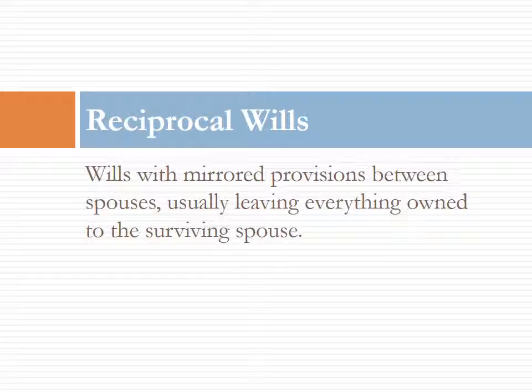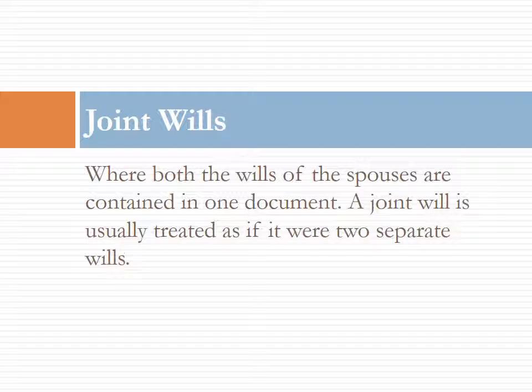Another type of will is called a reciprocal will. This is a will drafted between two individuals, each leaving everything owned to the other. This is commonly seen between spouses who have mirrored or reciprocal wills. In more rare cases there is a joint will — a single document that is treated as if it were two separate wills, providing for the disposition of the property on the occasion of the first person to die and then the remainder of the property upon the death of the second person.